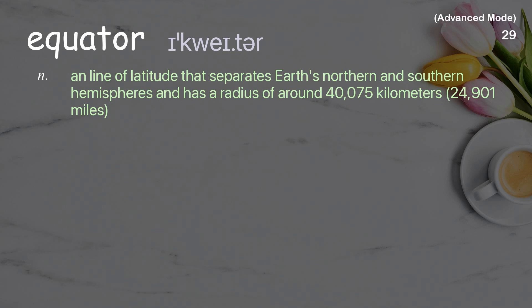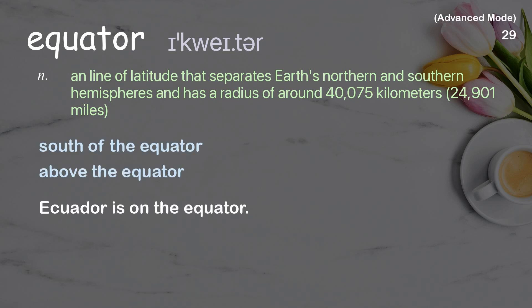Equator: a line of latitude that separates Earth's northern and southern hemispheres and has a radius of around 40,075 kilometers (24,901 miles). Examples: south of the equator, above the equator. Ecuador is on the equator.